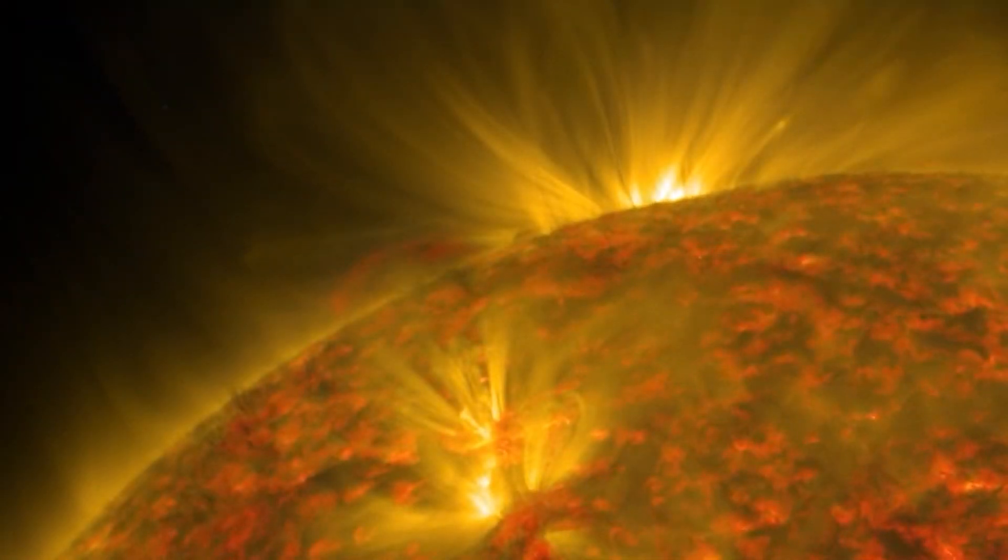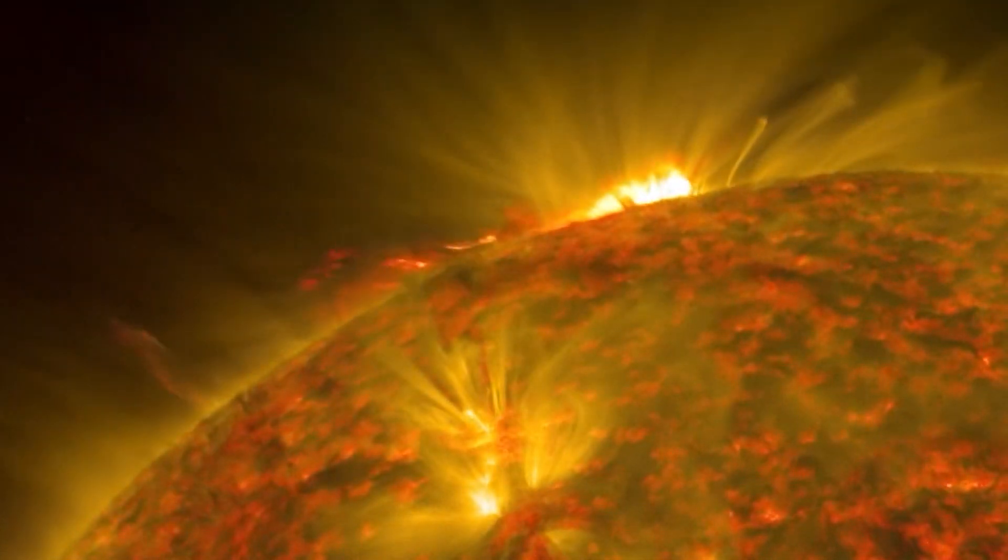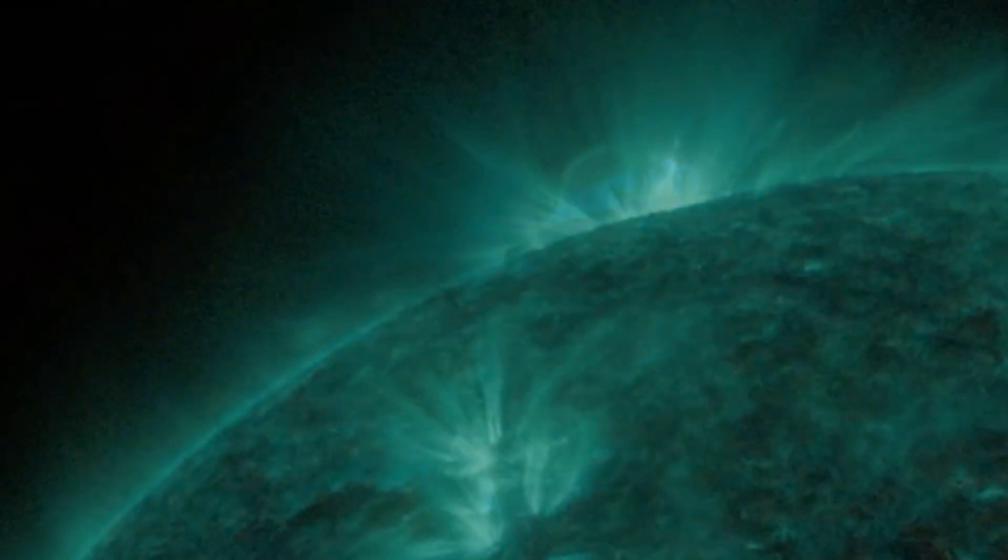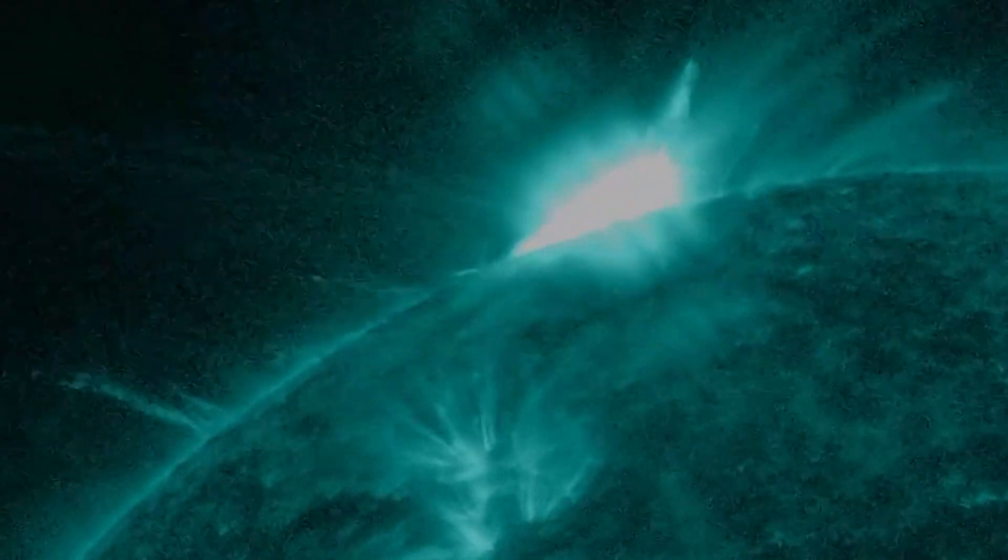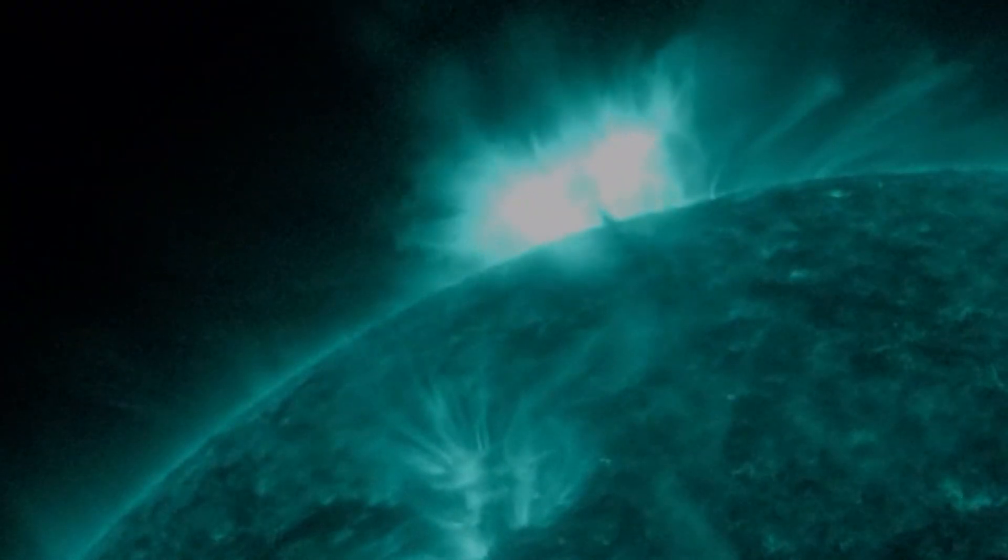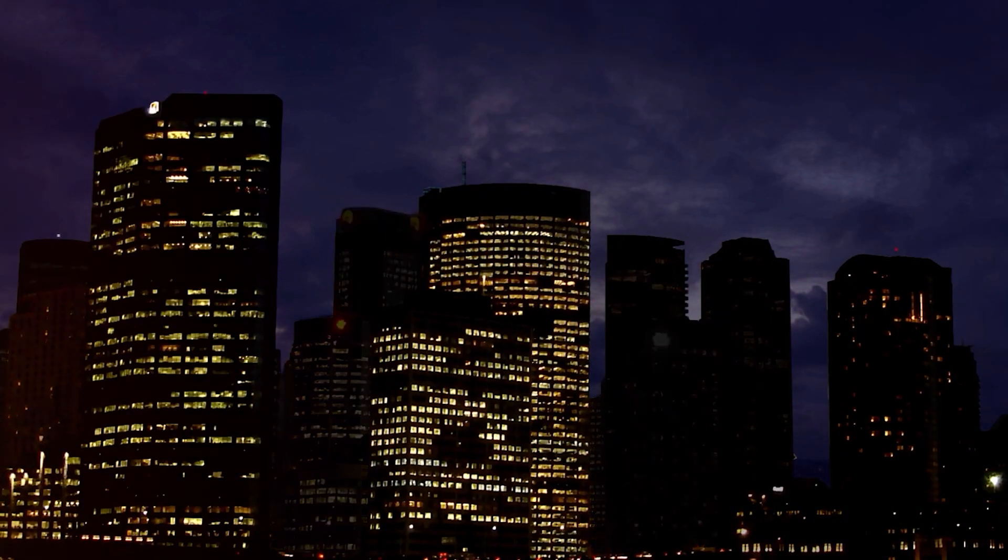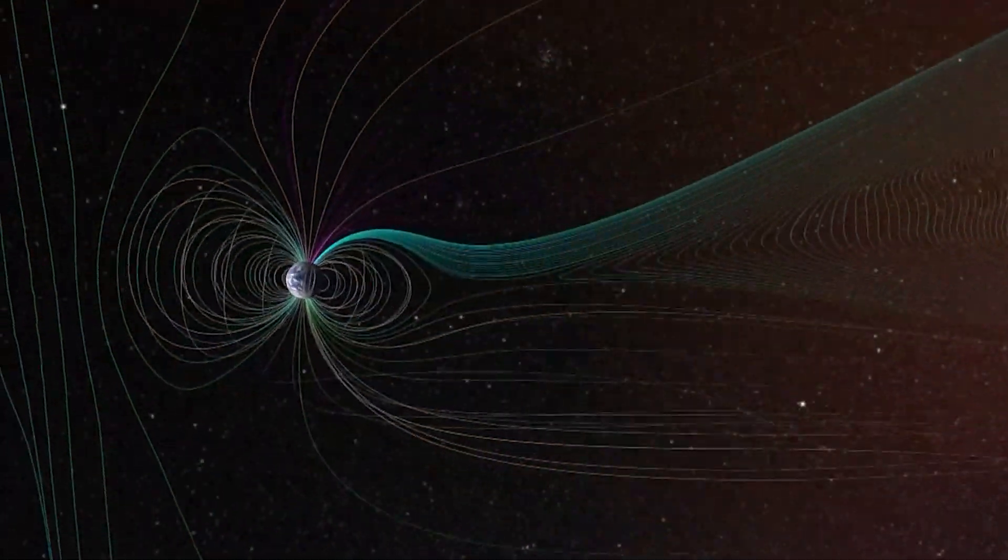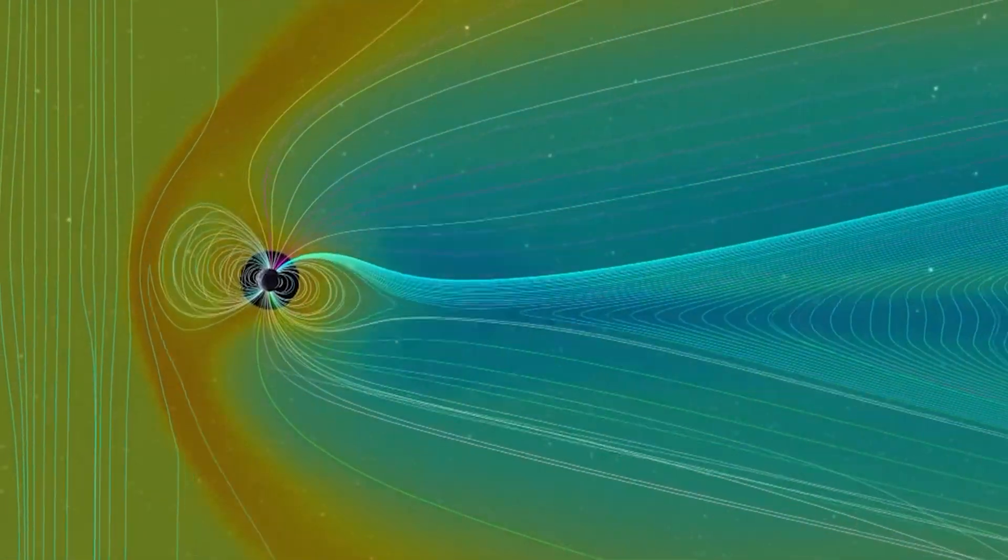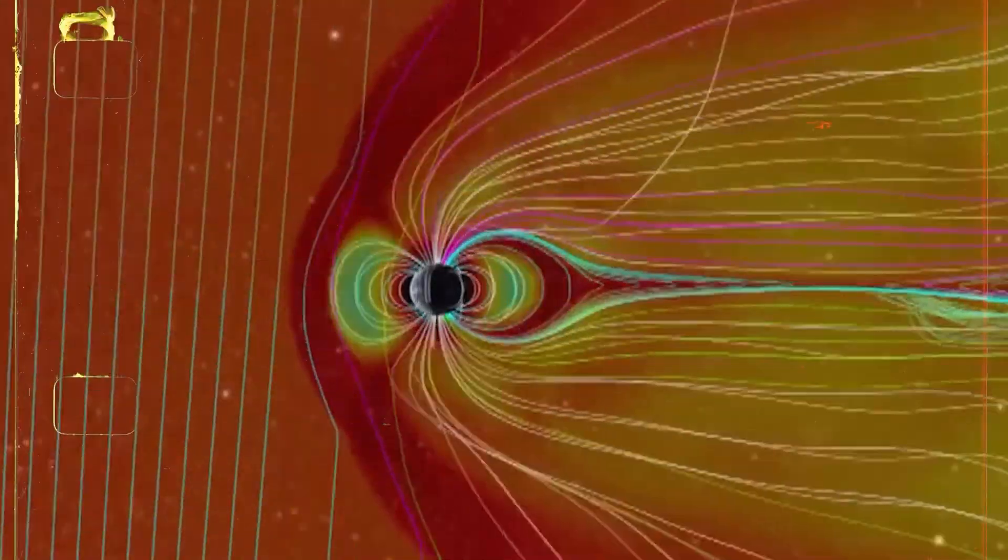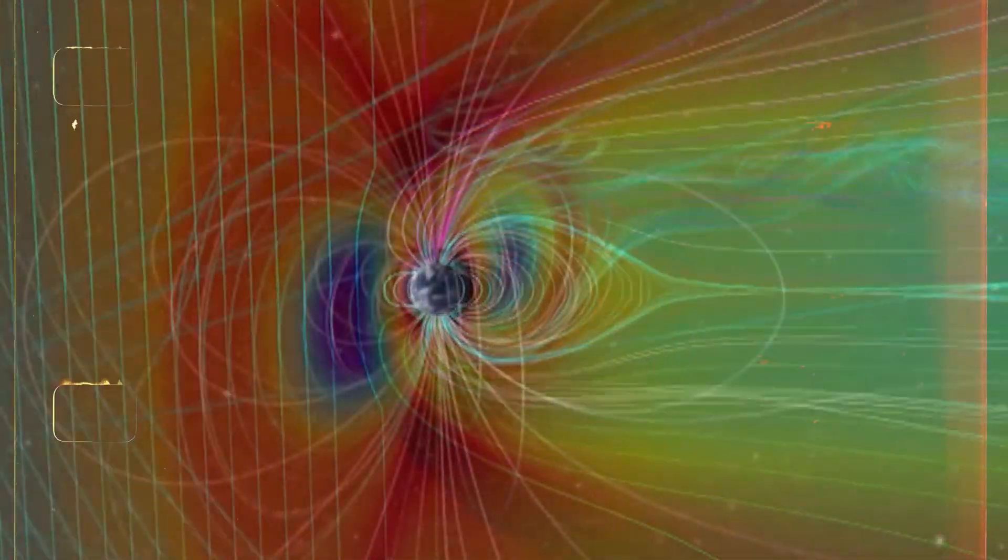Coronal mass ejections, CMEs and solar flares emit particles and radiation. Upon interacting with Earth's upper atmosphere, they result in the creation of geomagnetic storms. These storms generate fresh currents and inject energy into typically passive electrical grids, posing a risk of overload.